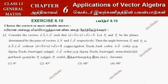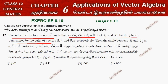Hi students, this is Alex here. Exercise 6.10, question number 12: Consider the vectors. One condition: A cross B cross of C cross D equals the zero vector. Let P1 and P2 be the planes determined by the pairs of vectors A, B and C, D respectively. Then find the angle between P1 and P2.